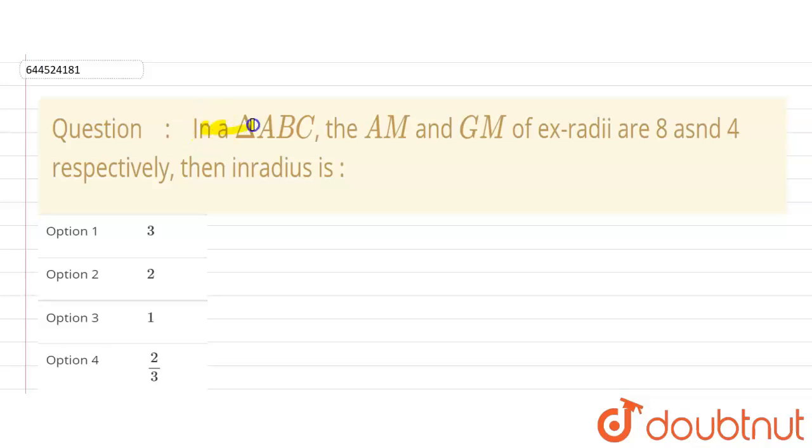Hello everyone, in this question it is given that in a triangle ABC, the AM and GM of ex-radii are given 8 and 4 respectively, then we need to find inner radius.